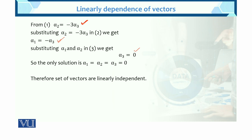So alpha 3 = 0. Substituting back: alpha 1 = −alpha 3 = 0, and alpha 2 = −3·alpha 3 = 0. The only solution for alpha 1, alpha 2, alpha 3 is zero. Therefore, the set of vectors is linearly independent.